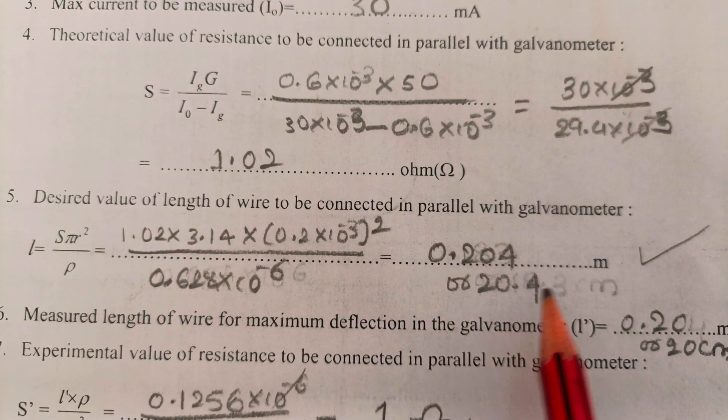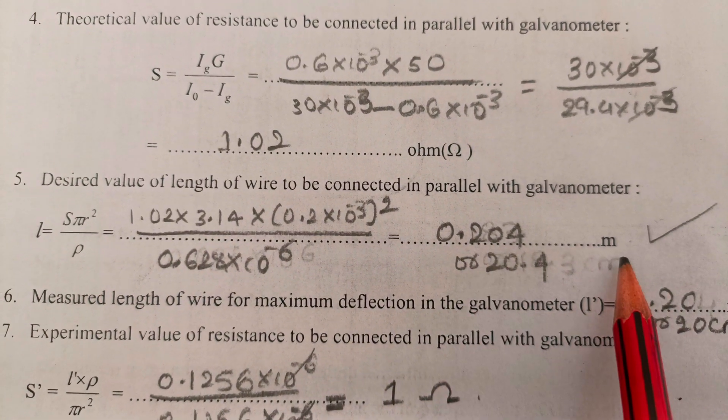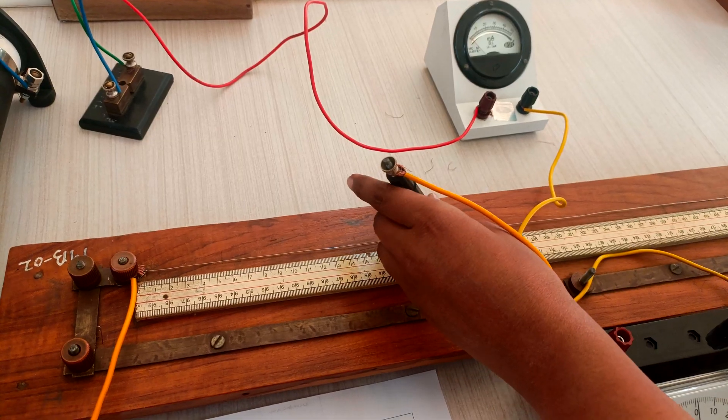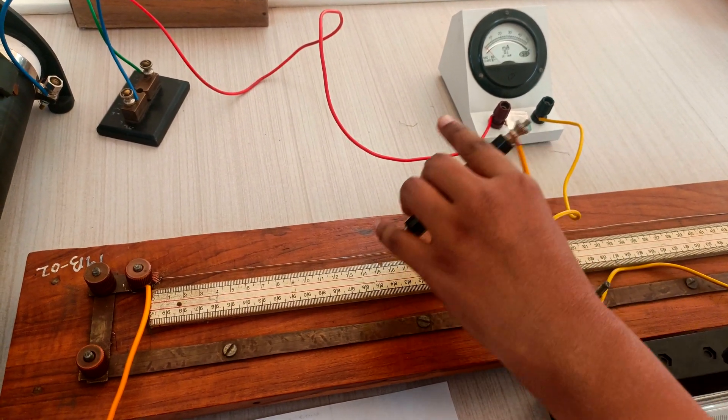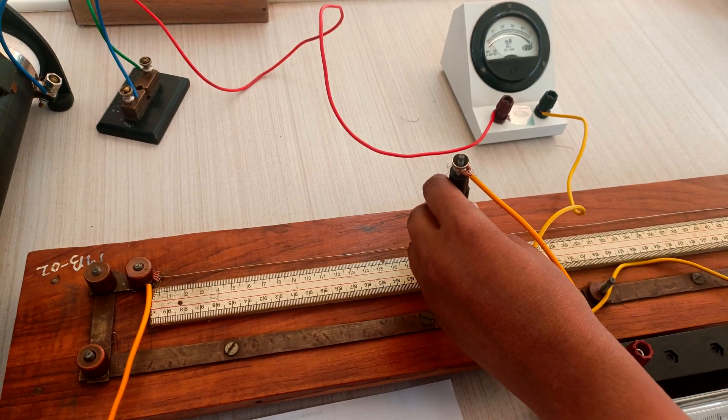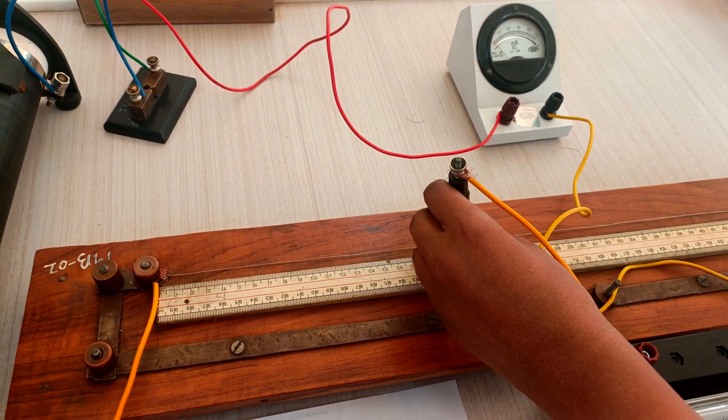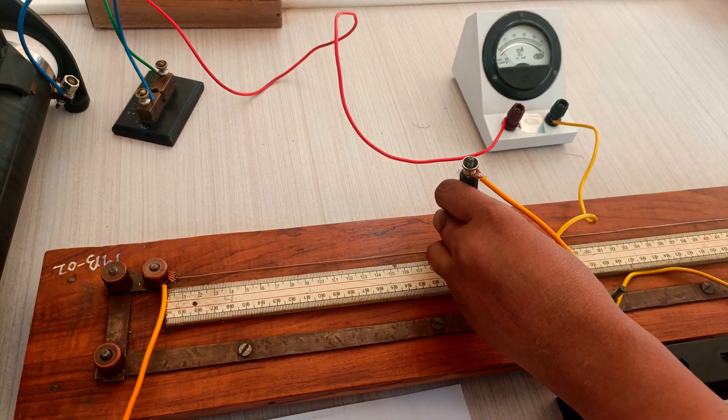We need to convert from 0 to 30 milliamps. To do that we need to adjust the ammeter by using the rheostat. Start by closing the plug key.